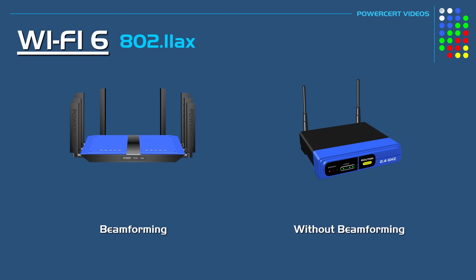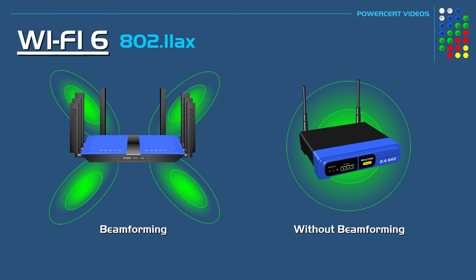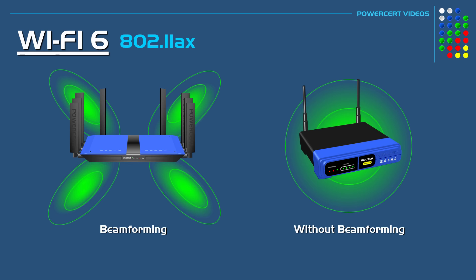Wi-Fi 6 also has an improvement in beamforming. Beamforming is a technique that sends transmissions in a specific direction, which strengthens the signal. Without beamforming, the transmission is sent in every direction, which can weaken the signal — which is what happens with older routers. But with newer routers, the signal is directed to the devices that are connected to it.